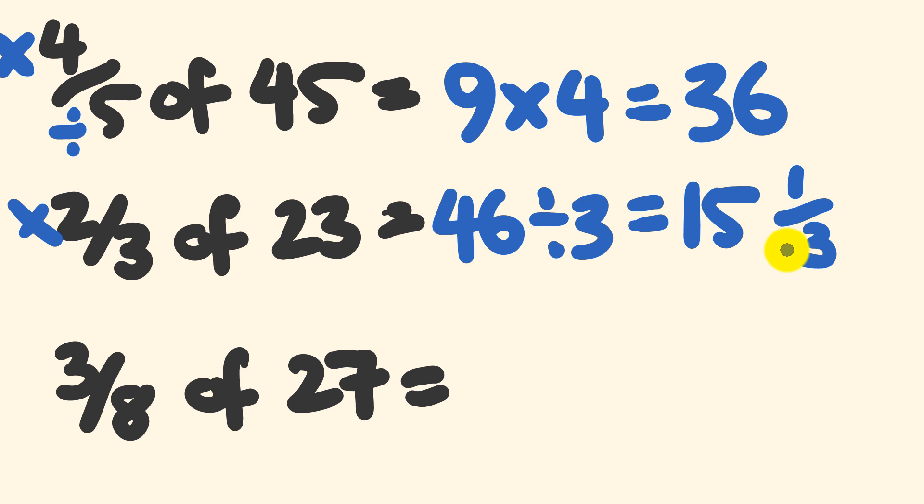To our last question, 3 eighths of 27. Now 8 doesn't go into 27 very well, so once again, I'm going to multiply first. What is 27 times 3? That's not too bad a question. 27 times 3 is 81, and I'm going to divide that by 8, which is a simple question. 81 divided by 8, well, 10 times 8 is 80, and we have 1 left over. We get our answer, 10 and 1 over 8. We use that bottom denominator there. Done and dusted.